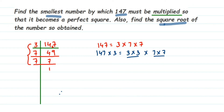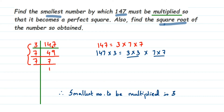So the smallest number to be multiplied is 3. Now we find the square root of the resulting number. 147 × 3: 3 sevens are 21, carry the 2; 12 plus 2 is 14; and 3 one is 3, plus 1 is 4. So 147 × 3 = 441.